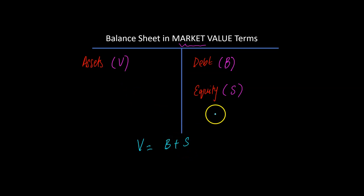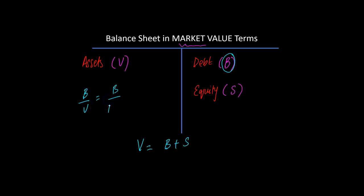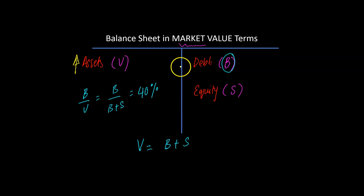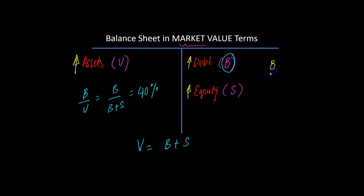Currently, the market value of debt B over V, which is the same as B over B plus S, is equal to 40%. What the firm is planning to do is invest in additional assets, funded using additional debt and some additional equity, but with debt being more, so that after the investment the market value of debt as a fraction of total value will be 50%. So the firm's target debt ratio is 50%.